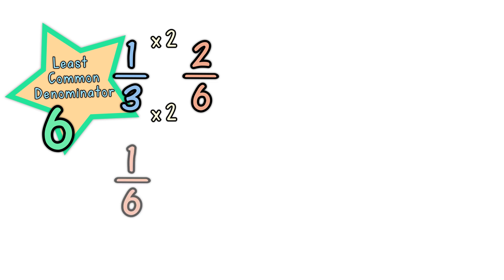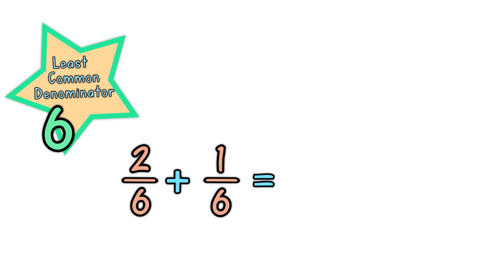One-sixth already has a denominator of six. And our question now looks like two-sixths plus one-sixth equals three-sixths. One last step is to simplify the fraction, if possible. In this case, three-sixths is simpler as one-half. And that is what the least common denominator is all about.